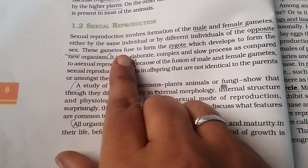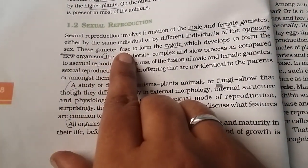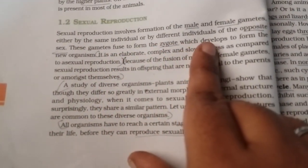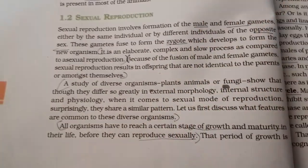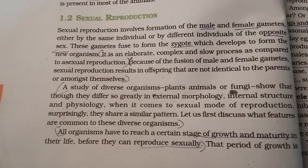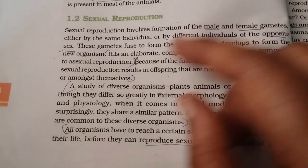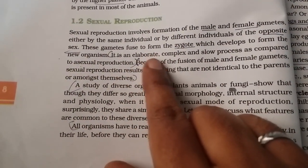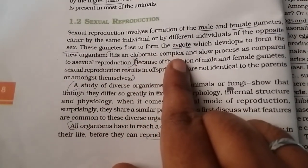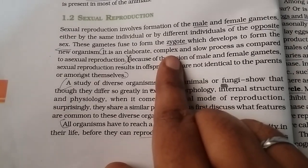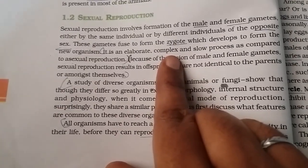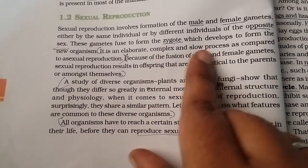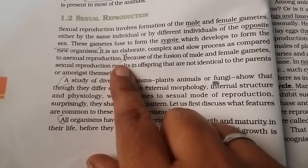The gametes fuse to form the zygote, which develops to form the new organism. Sexual reproduction is a complex process and it is a slow process as compared to asexual reproduction.